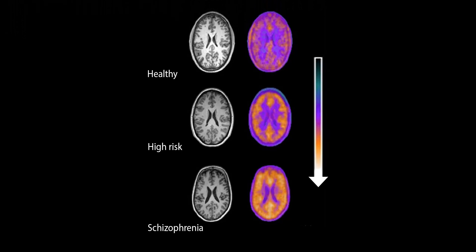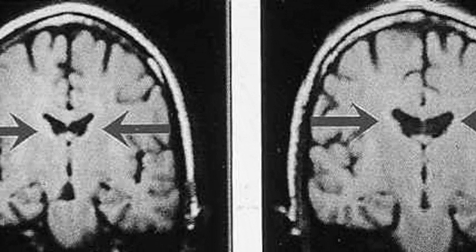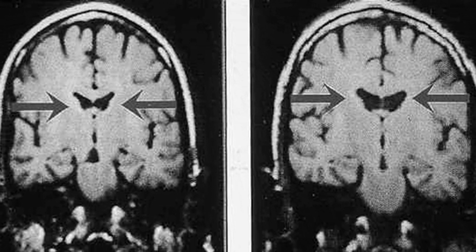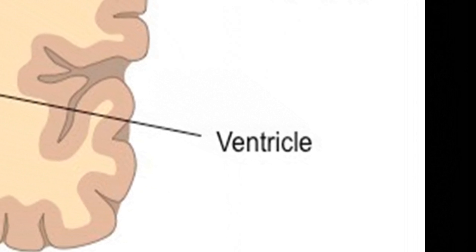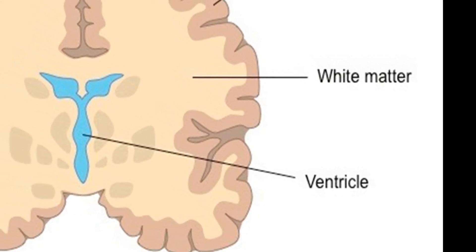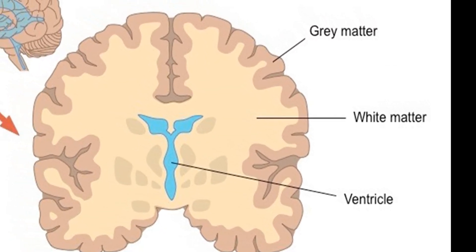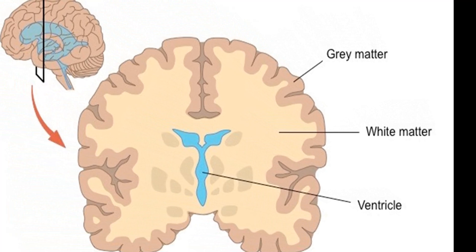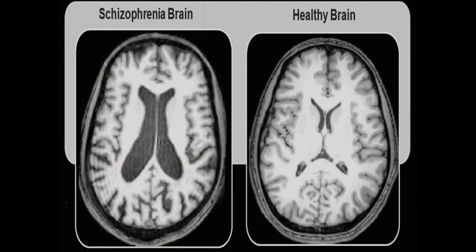Ventricles: research has shown that people with schizophrenia have abnormally large ventricles in the brain, particularly in those displaying negative symptoms, though this is not true for all people with schizophrenia. Ventricles are fluid-filled cavities in the brain that supply nutrients and remove waste. Enlarged ventricles are thought to be a consequence of nearby brain areas not developing properly or being damaged. The ventricles of a person with schizophrenia are on average about 15% bigger than normal, according to Torrey in 2002.